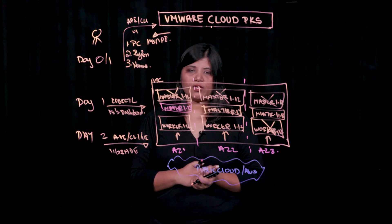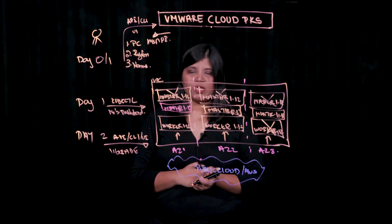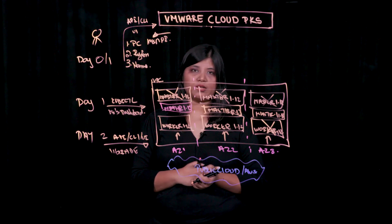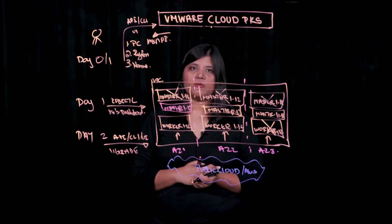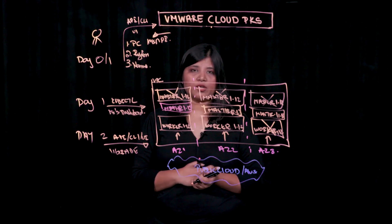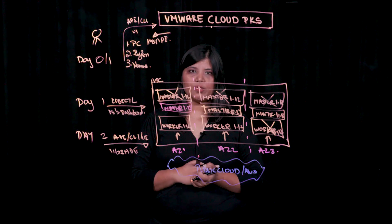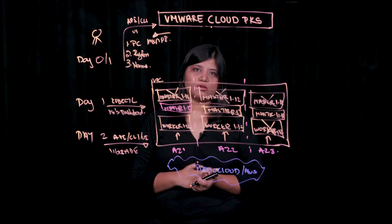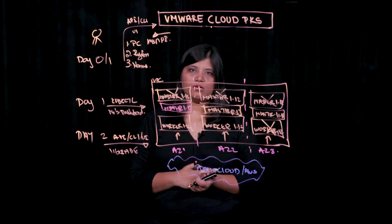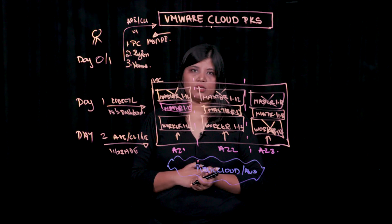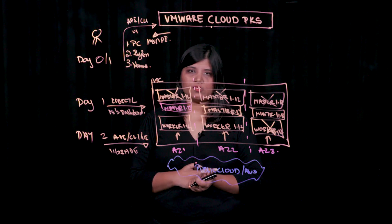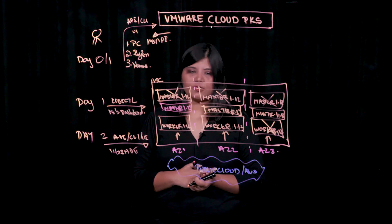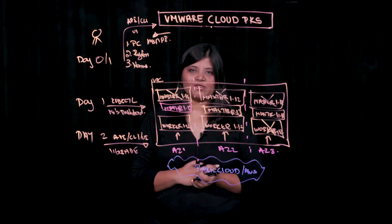VMware Cloud PKS also supports the backend worker nodes and master nodes used to create the cluster. The VMware Cloud PKS operations team ensures that the operating system running on these different nodes is constantly patched, with all vulnerability and security patches applied, to ensure that the cluster is running in a secure state. That's all about VMware Cloud PKS Smart Clusters.